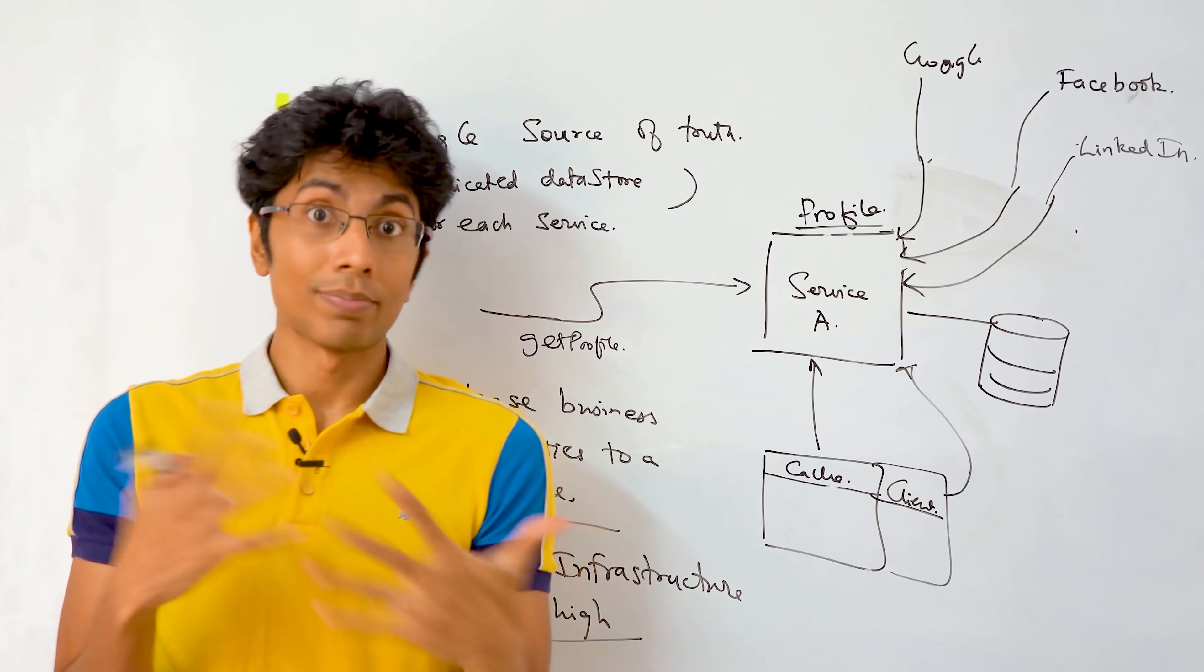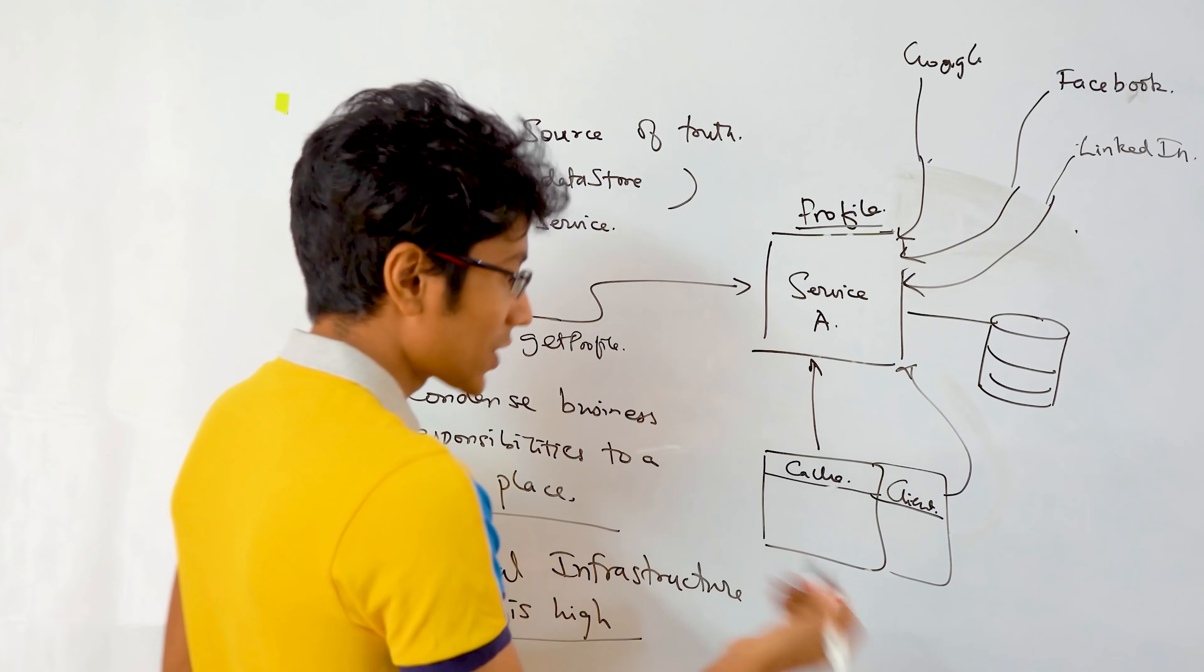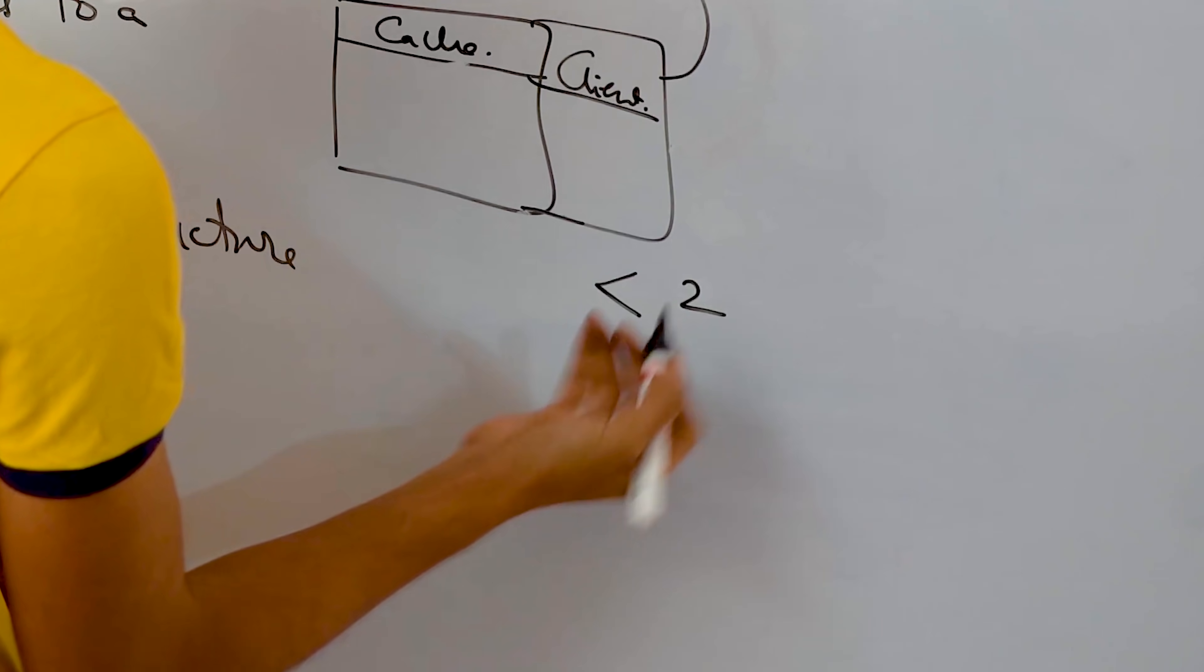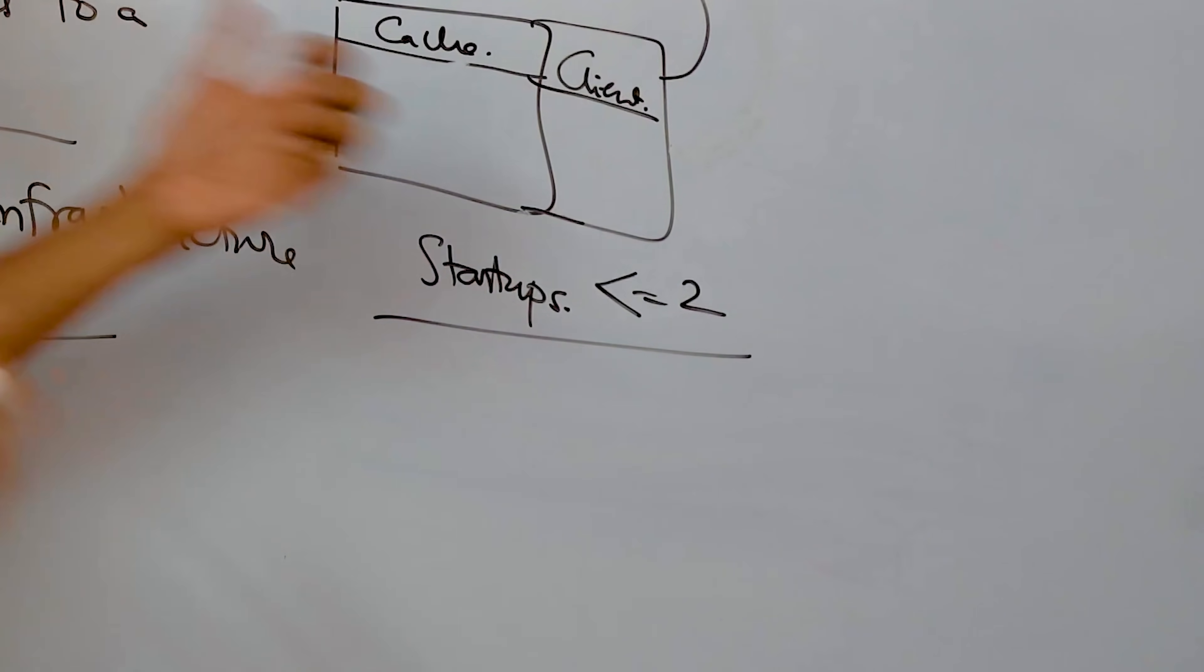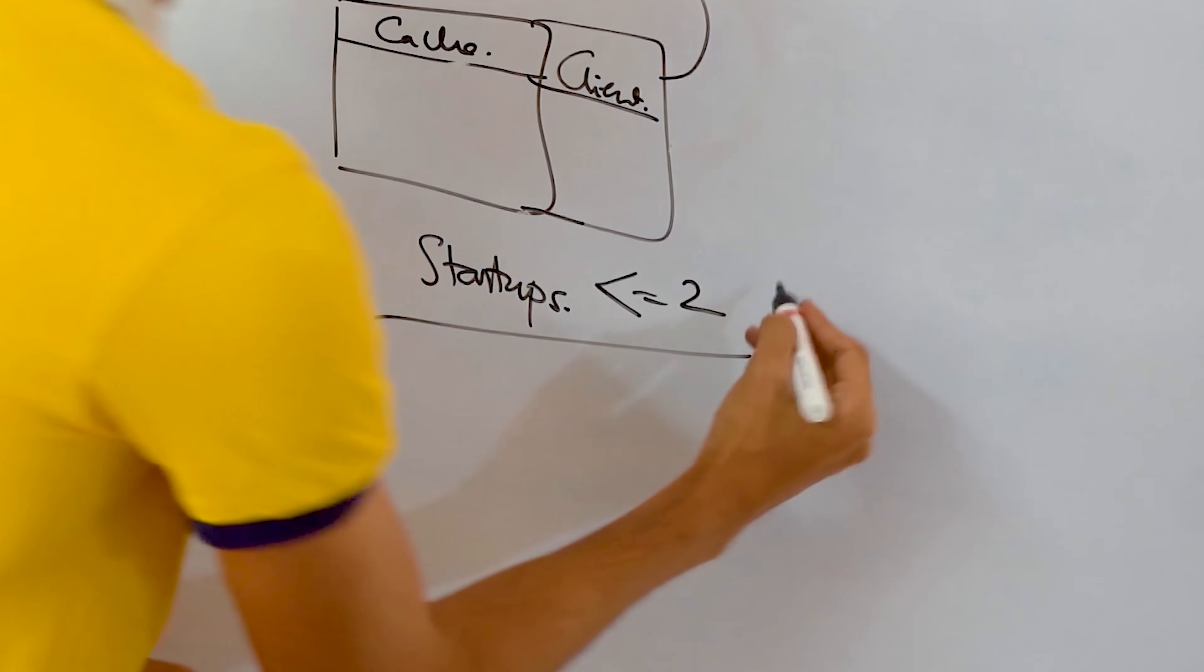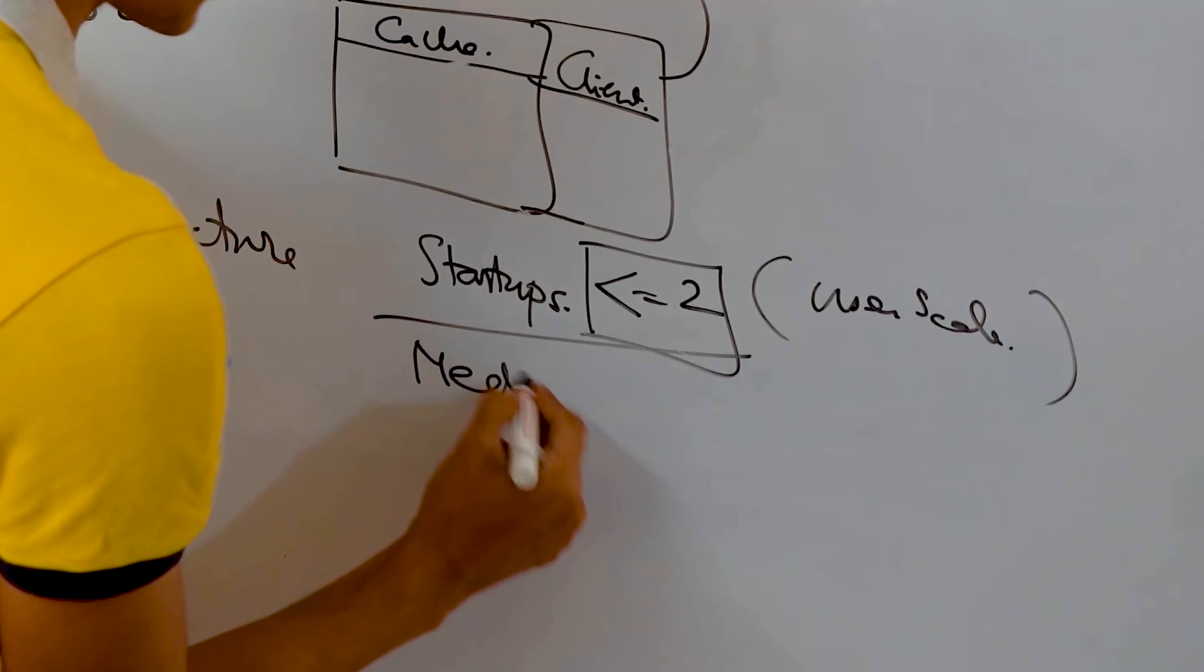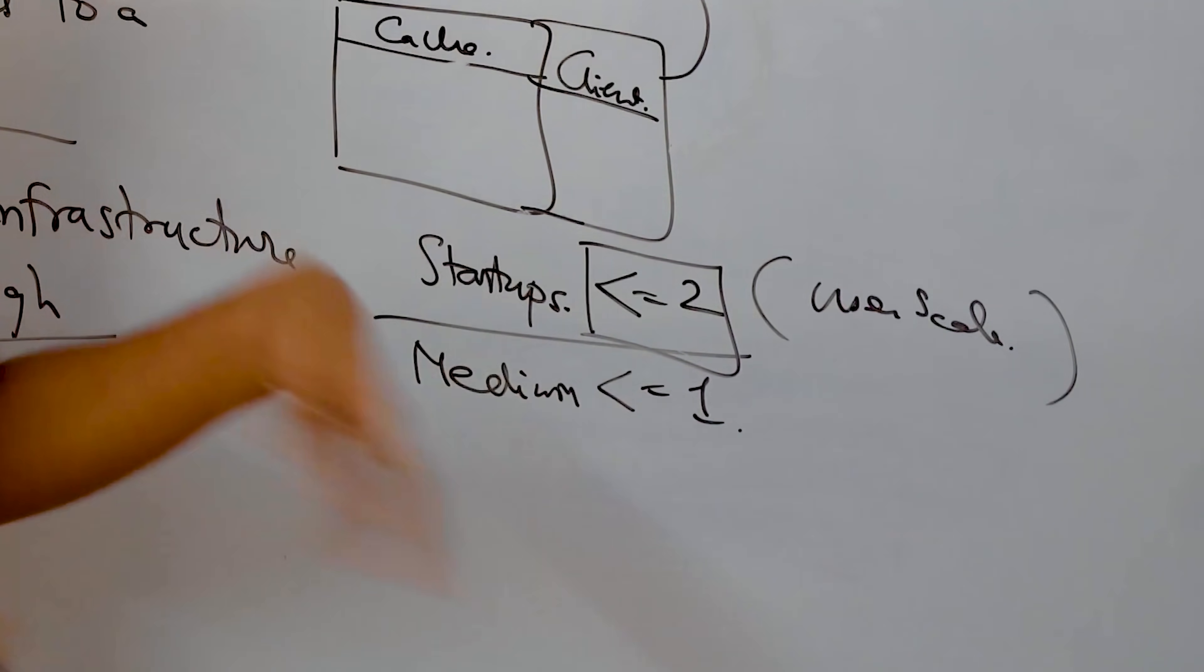So ideally this is my own hocus pocus formula, but for a startup really going for a microservice architecture is fine if the total number of services that you are handling per person is less than or equal to two. So this is for startups. One person is handling less than equal to two microservices. Basically it depends also on the user scale, but for startups, this number is very flexible. As for medium organizations, I would say one person should be handling less than or equal to one service.